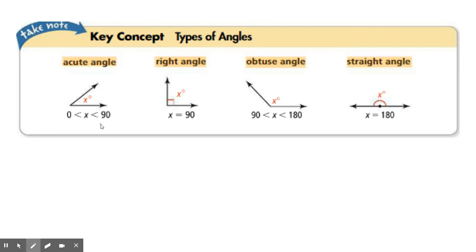Think of a puppy, how cute a puppy is. It's really small. That's acute. We have right angles. Right angles have this right angle box, and they're 90 degrees.